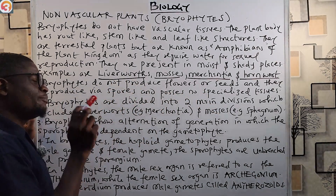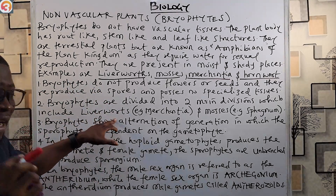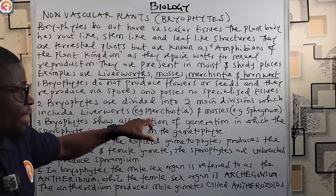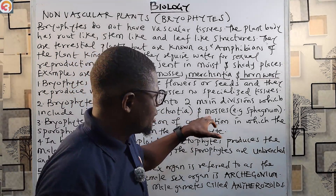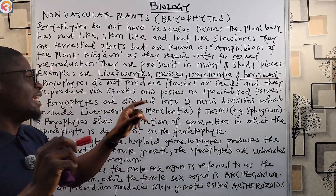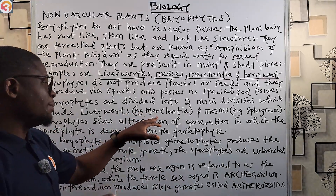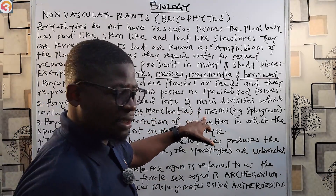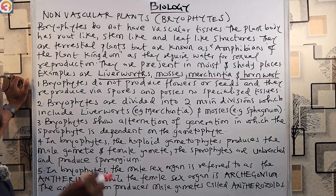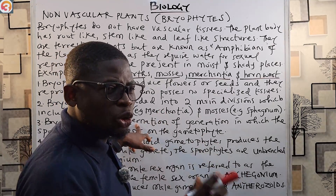Bryophytes are divided into two main divisions: the liverworts — for example, marchantia — and the mosses — for example, sphagnum. Please take note of that.